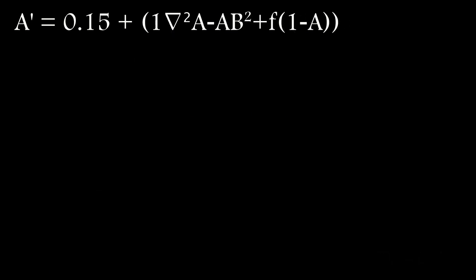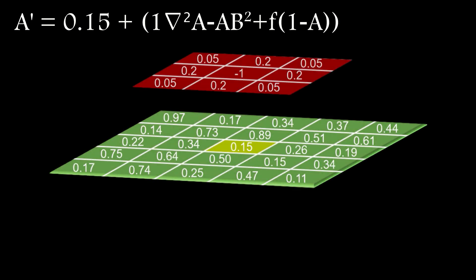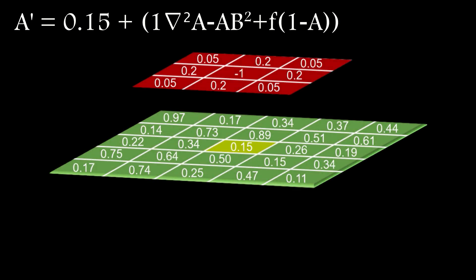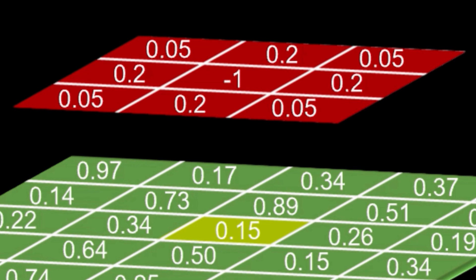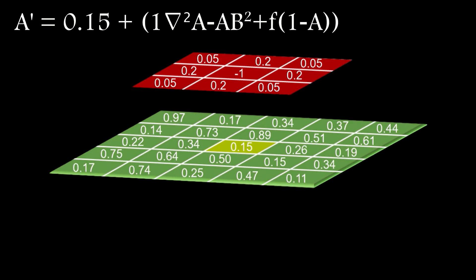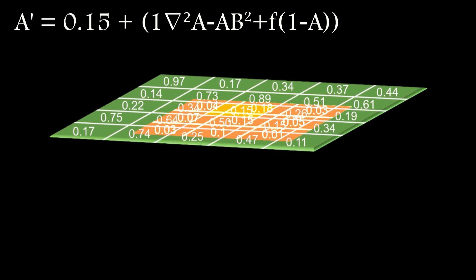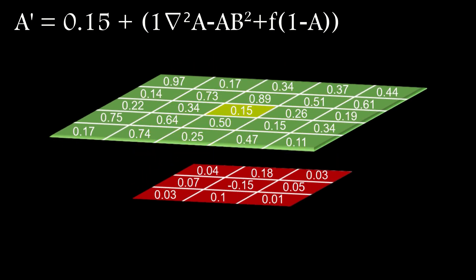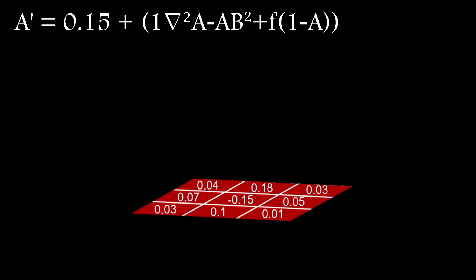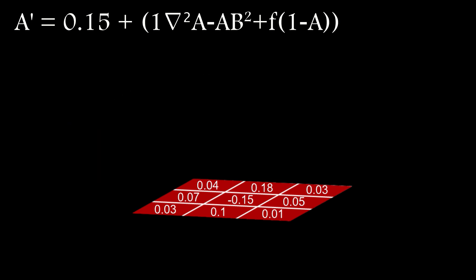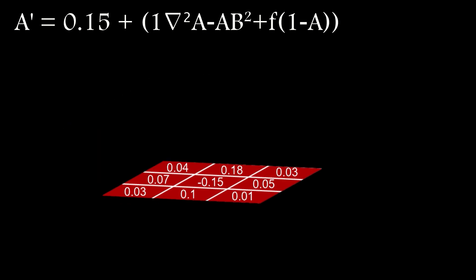The Laplacian is performed with a 3 by 3 convolution with centre weight minus 1, adjacent neighbours of 0.2, and diagonals of 0.05. All that simply means is that I take a 3 by 3 matrix or kernel, centre it over the pixel in question, multiply the pixel values for chemical A by the corresponding values in the kernel, and then add up the results.